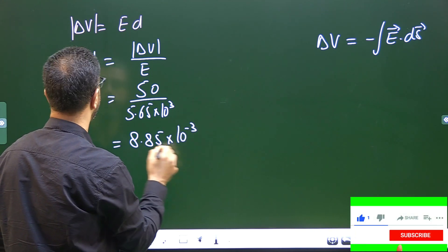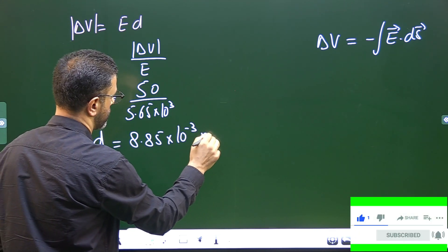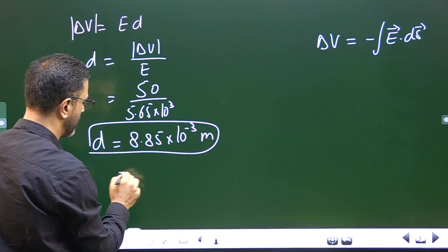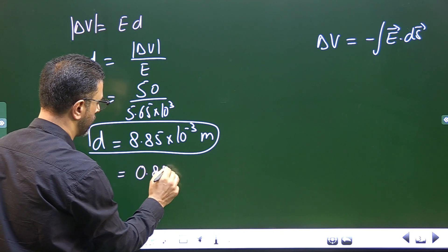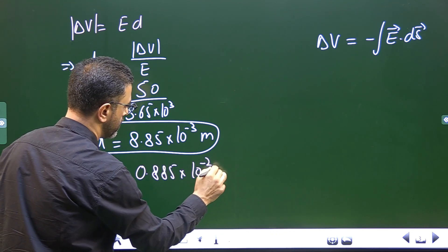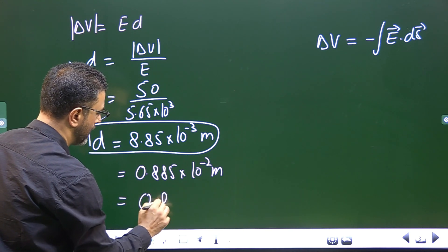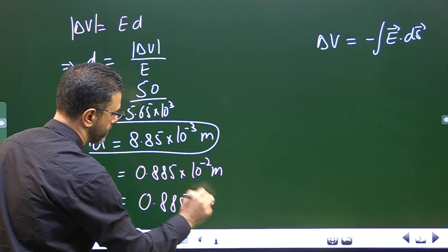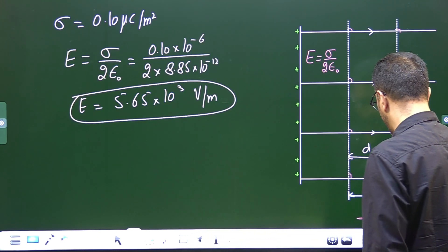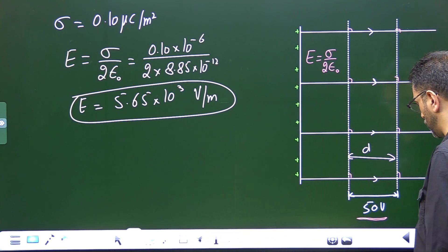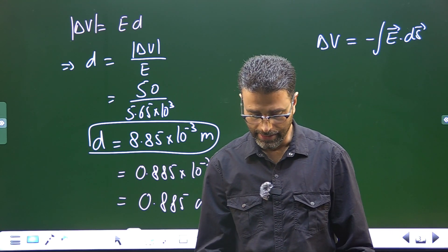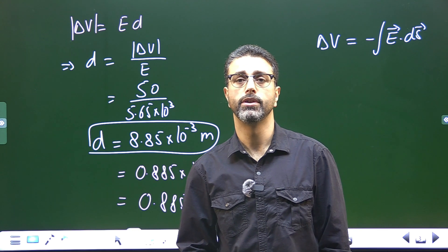This gives D equal to 8.85 times 10 to the power minus 3 meters, or equivalently 0.885 centimeters. So the physical separation between the two equipotential surfaces is 0.885 centimeters. That's all we were asked to find out in this problem.